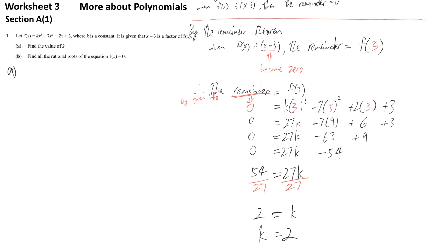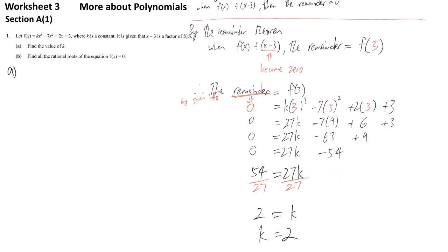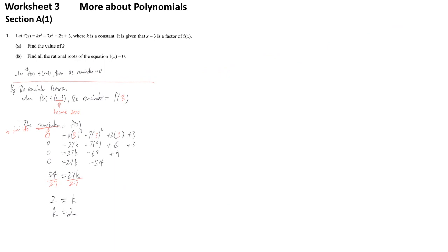The logic here is: one side uses the given information from the question, and the other side applies remainder theorem to express the remainder in terms of k. Since both sides refer to the same remainder, you build an equation with k as the only unknown. This equation could be linear, quadratic, or even exponential — you just use the appropriate technique to solve it. That's all for part A.